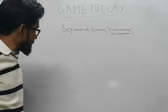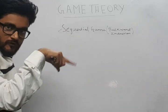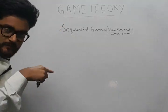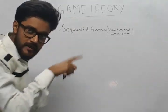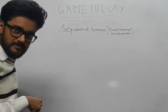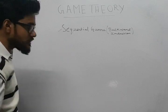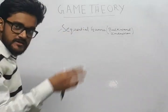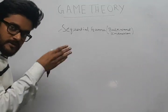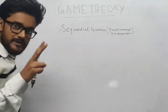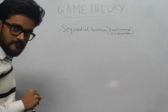In a simultaneous game, which we have seen represented as a matrix, one player plays and the other player plays at the same time. But in a sequential game, first one player plays, and then that player knows what the strategies of player 2 will be if he plays this or that.